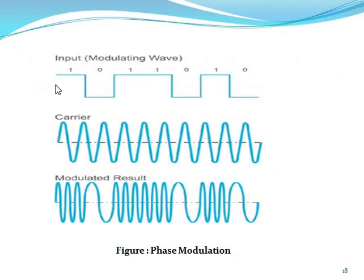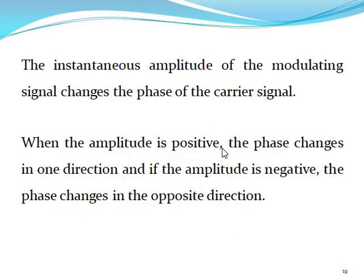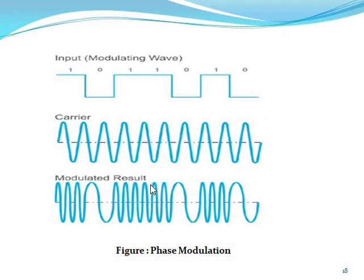We can show that here: the amplitude is positive — we can show the positive value; the amplitude is negative — so this is the negative. We can observe that if the modulation signal amplitude is negative, the modulation result changes also. The modulation is positive when the amplitude is positive. When the amplitude is positive, the phase changes in one direction; and if the amplitude is negative, the phase changes in the opposite direction. This is the basic difference between the modulation techniques.